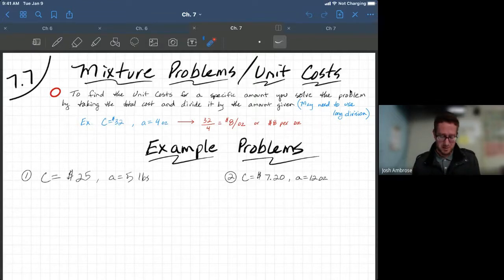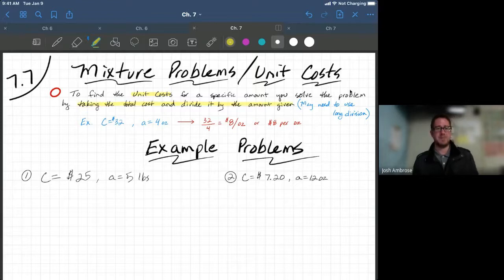To find the unit cost, you're going to find a specific amount. How are you going to do that? Taking the total cost and dividing it by the amount given. Boom. That's the key piece. To find the unit cost, how do we do it?